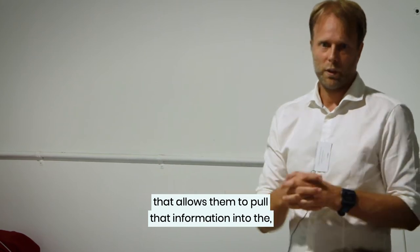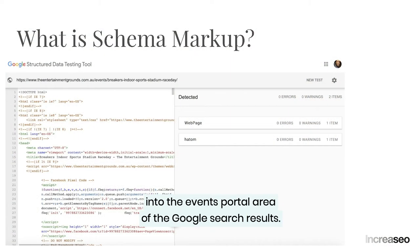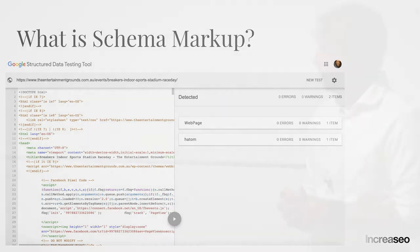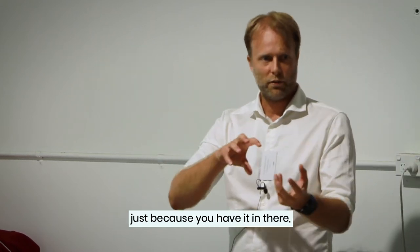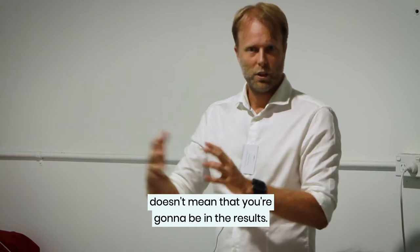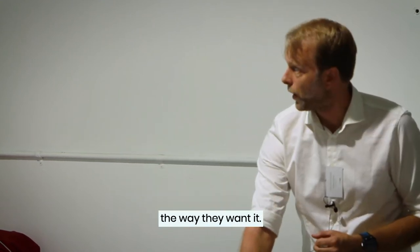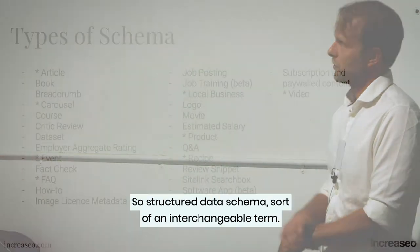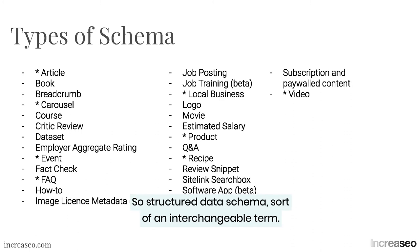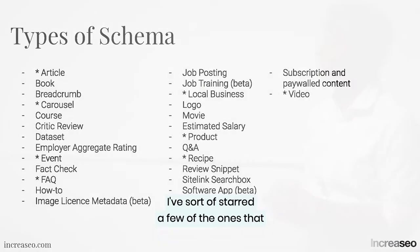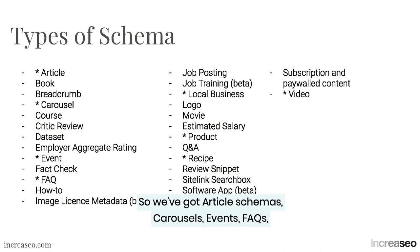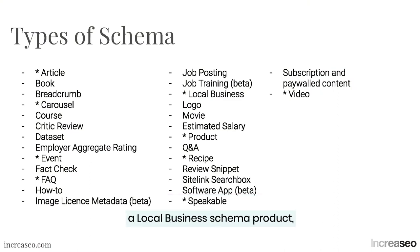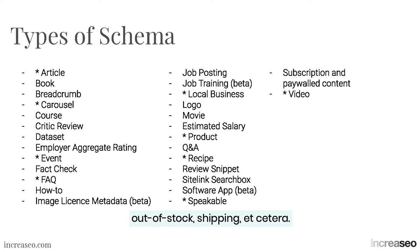Google's not seeing the information in a way that allows them to pull it into the events portal area of the search results. Just because you have structured data doesn't mean you'll be in there, and just because you have it doesn't guarantee results — but you need to present the information to Google the way they want it. Here are the different types of schema — structured data and schema are sort of interchangeable terms. The most relevant ones include article, carousels, events, FAQs, local business, product, and recipes.